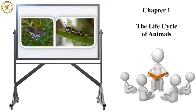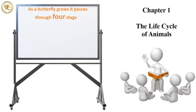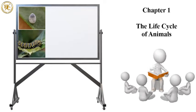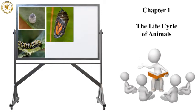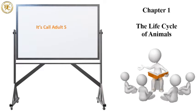The example of metamorphosis is the caterpillar and butterfly. So, let's study in detail about the growth of a butterfly. As a butterfly grows, it passes through four stages. These stages are: first, egg; second stage is larva; third stage is pupa; and the fourth stage in which a butterfly is fully grown into an adult is called the adult stage.